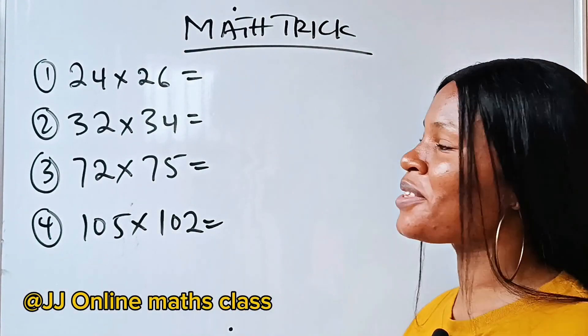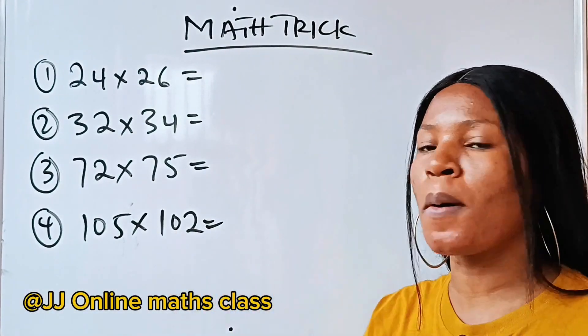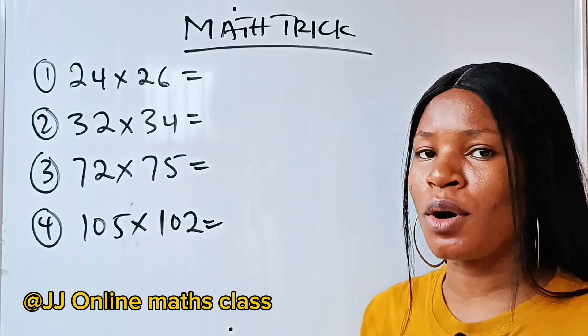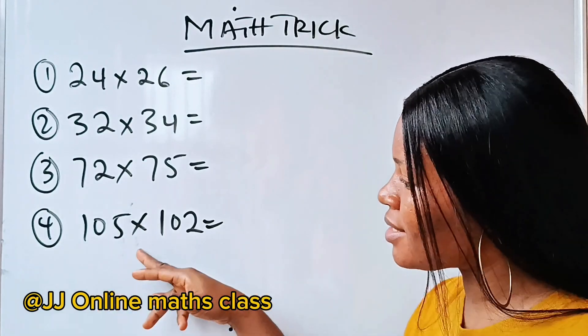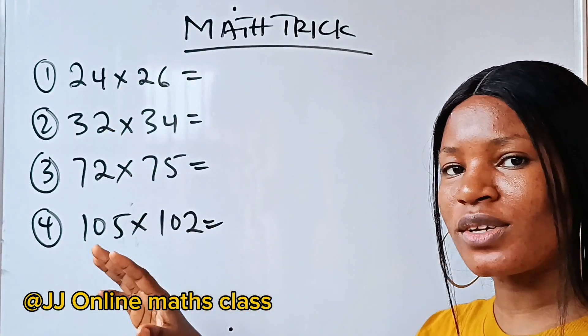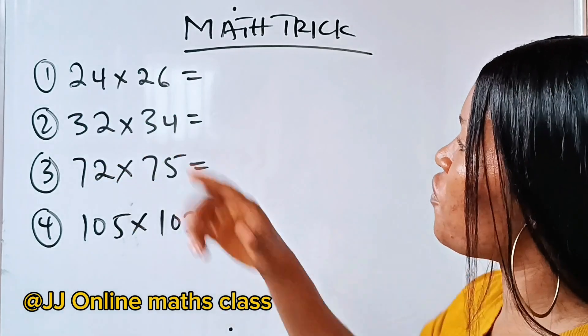Let's discuss the easiest way to multiply any two-digit number or even a three-digit number. We are going to do this last. Just see how we are going to do the first, the second, the third. Alright, for the first one,